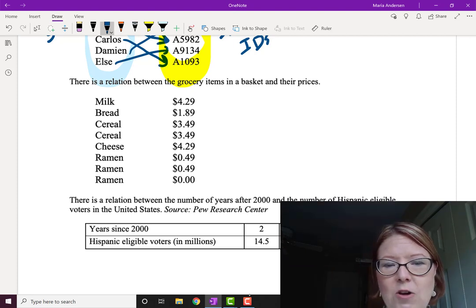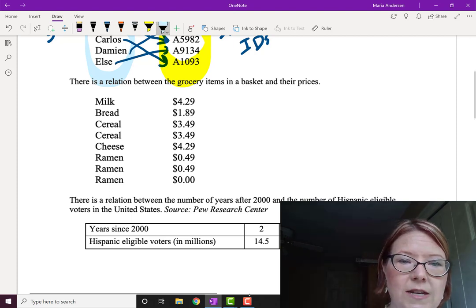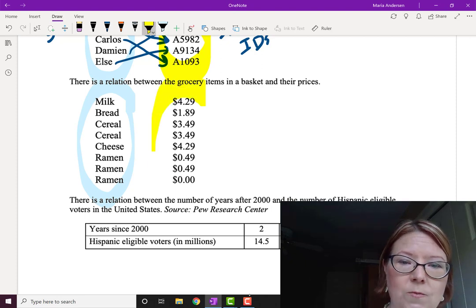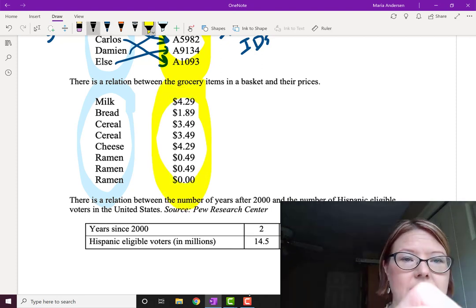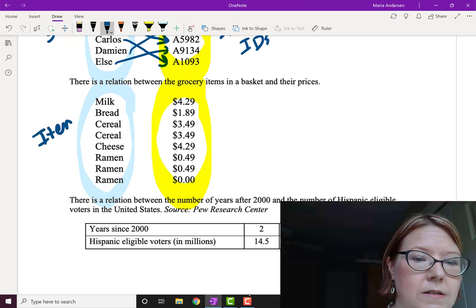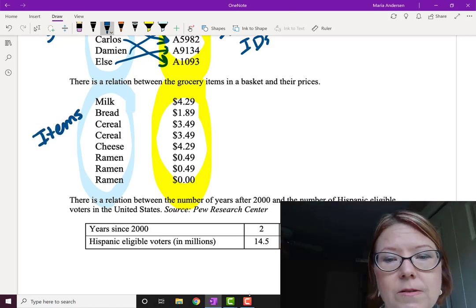It is a relation. It may bother you a bit that ramen has two different prices, and we'll get to that in a second. So again, we have two sets. We have the grocery store items, and we have their prices. So we have a set of items and a set of prices.